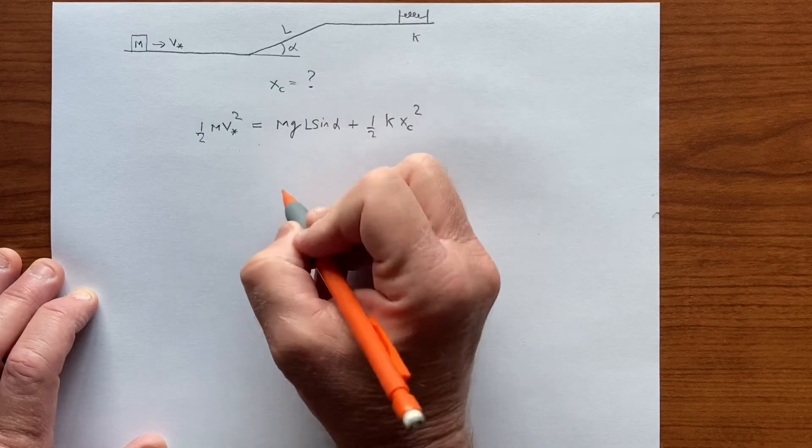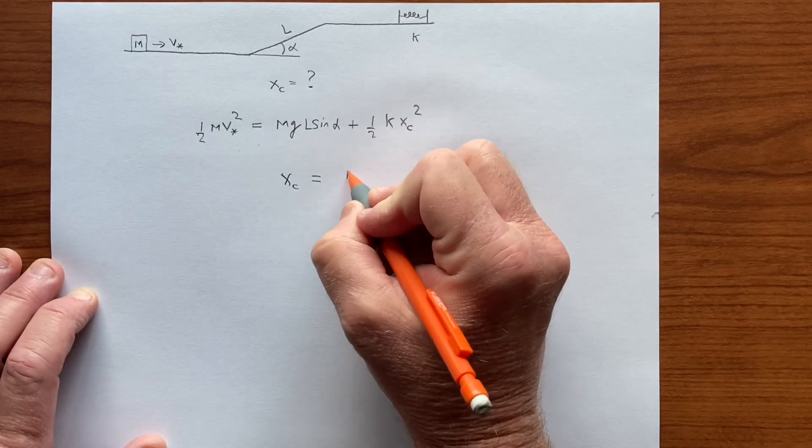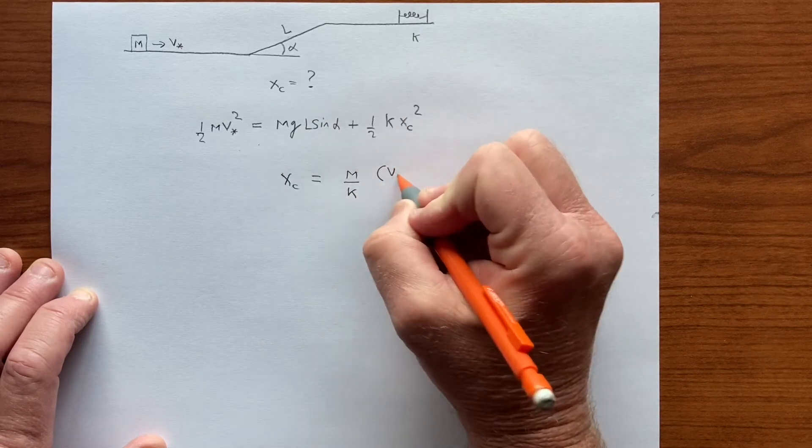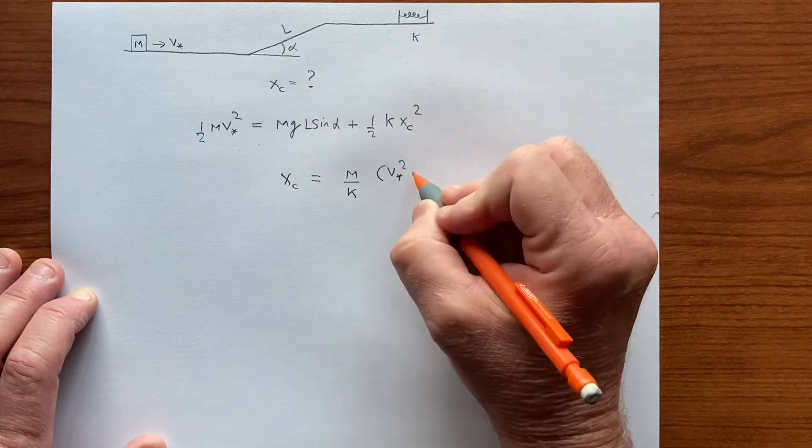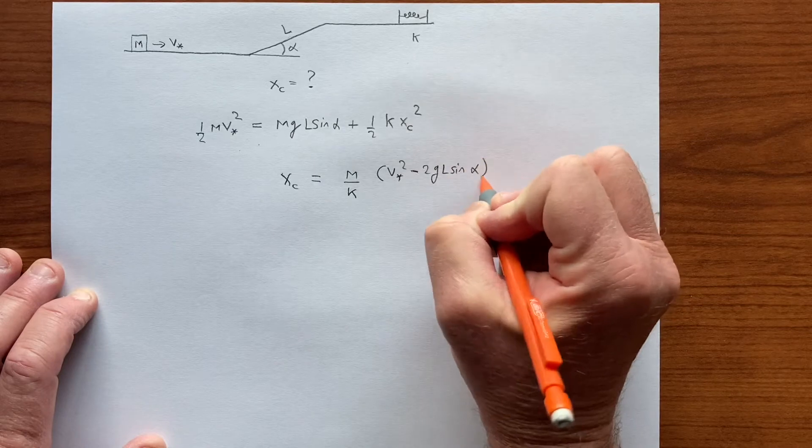So we're taking this to that side and we're getting that Xc is equal to the square root of the mass over the spring constant times the V star squared minus 2 GL sine of alpha.